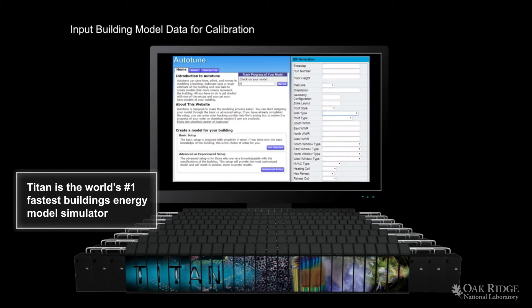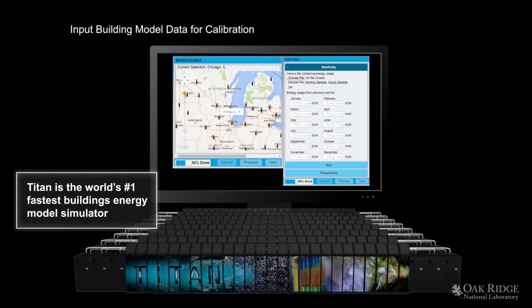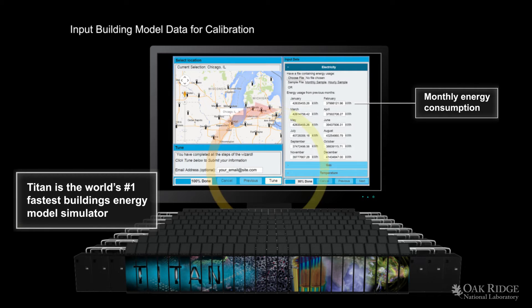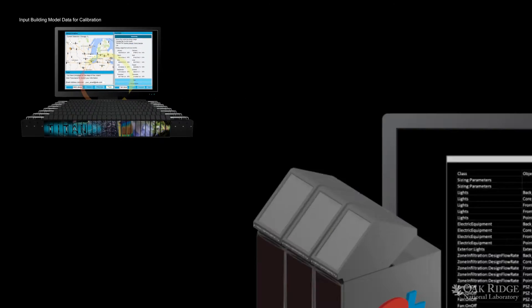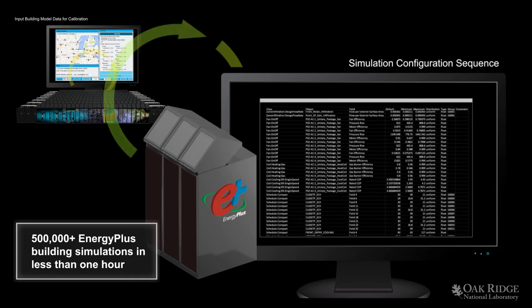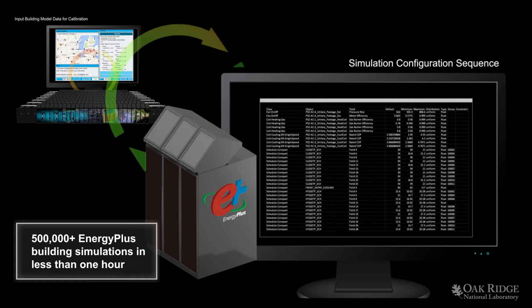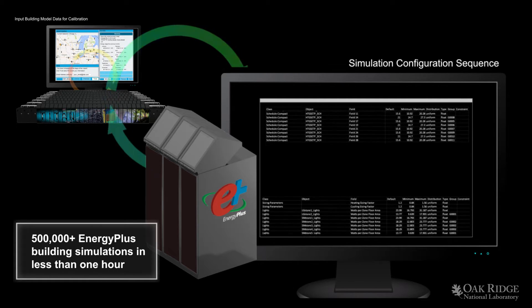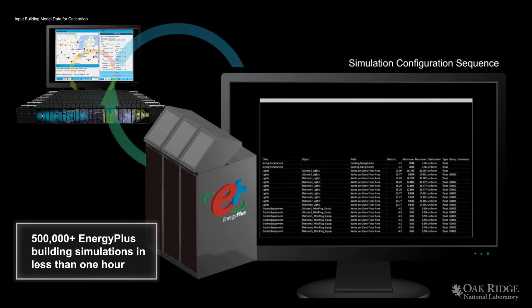Titan, the fastest supercomputer in the US, was used to figure out what is typically wrong with a building model and correct it. Using the relationships found by supercomputers, AutoTune uses evolutionary computation as the best algorithm for calibrating a model.